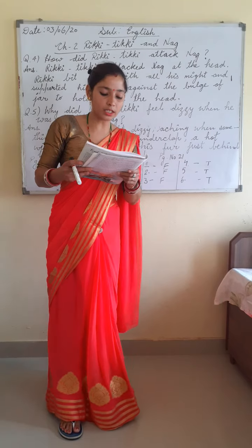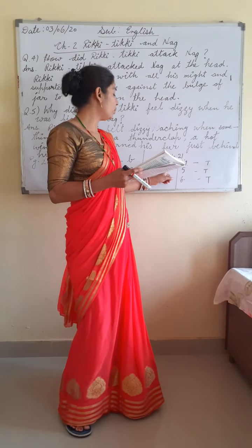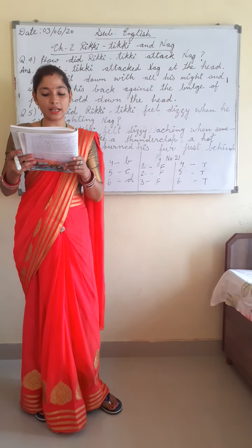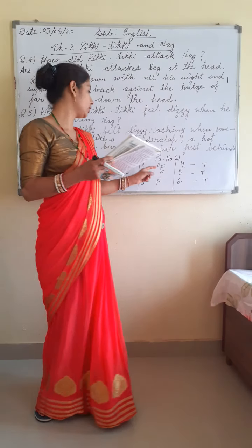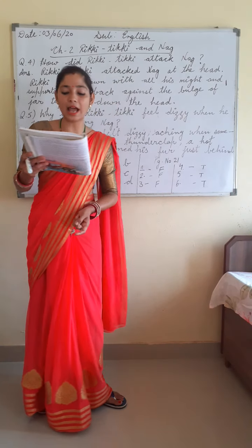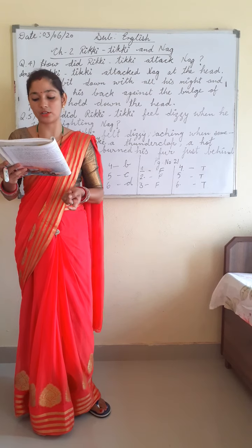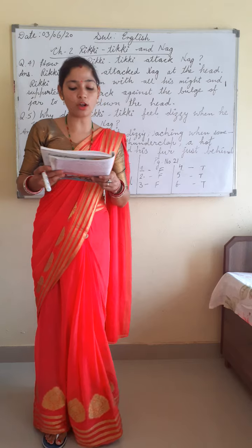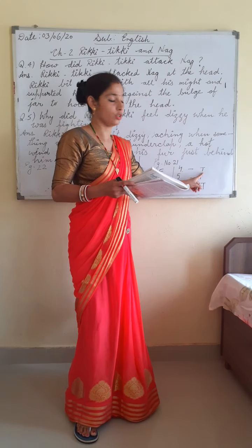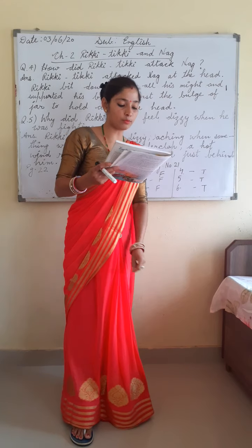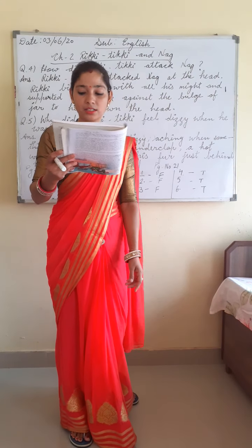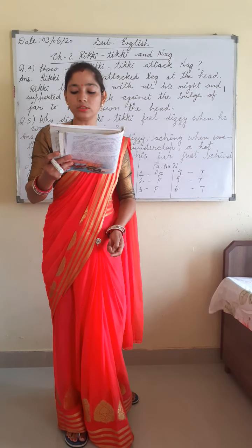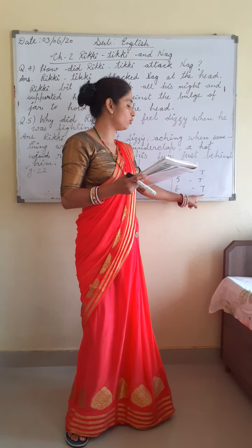Statement 1: Rikki Tikki wanted to kill Chuchundra — you will mention F. Statement 2: Nag and Nagina were whispering in Teddy's bedroom — you will mention F. Statement 3: Nagina had laid eggs in the cabbage patch — you will mention F. Statement 4: Nag was coiled around the bath — this statement is true, so you will mention T. Statement 5: Rikki Tikki bit Nag's head — this is also true, mention T. Statement 6: The big man threw Nag — this is also true, mention T.